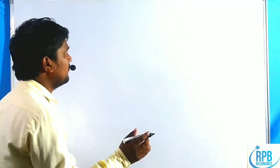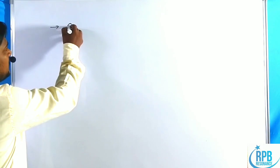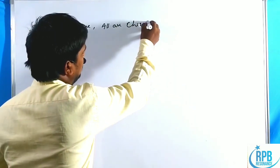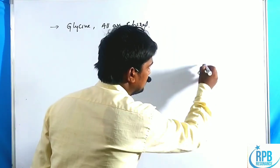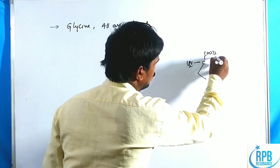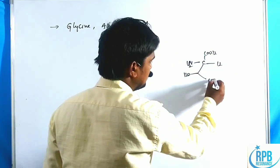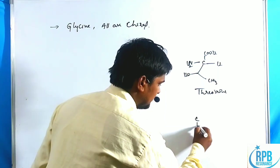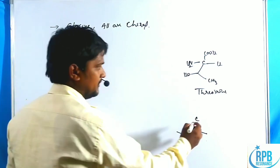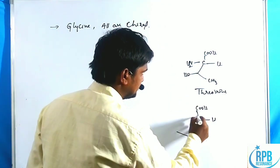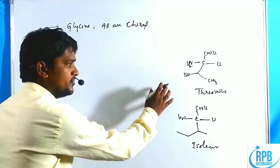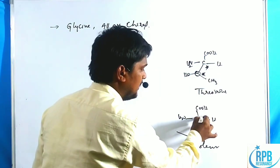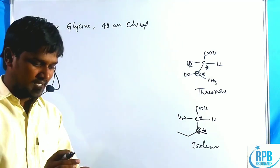Among all amino acid compounds, except glycine, all are chiral. In the case of threonine and isoleucine, threonine has the structure NH2, COOH, H, and OH with CH3; isoleucine similarly has NH2 and COOH. These two compounds have an additional chiral center, indicated by an asterisk symbol. All amino acids have only one chiral center except glycine, but these two have an additional chiral center.